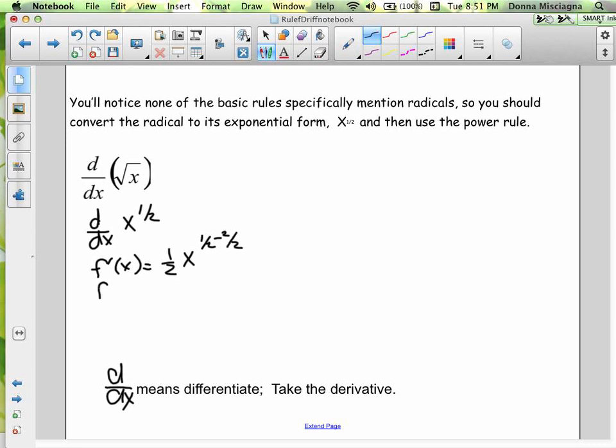So that means f'(x) is going to be 1/2 x to the -1/2. 1/2 minus 2/2 is going to be negative 1/2, and then you need to simplify that. So f'(x) equals 1 divided by 2, and then you can either have it be x to the 1/2 in the denominator or I kind of prefer it this way.